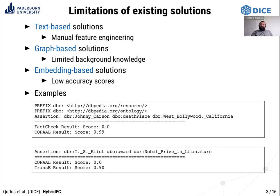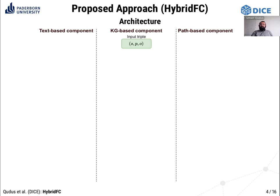Hence, we propose Hybrid FC, which alleviates these limitations by exploiting the principle of diversity and accuracy known from ensemble learning settings. Coming towards the architecture: Hybrid FC consists of four components — the text-based component, KG embedding-based component, path-based component, and neural network-based component.